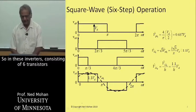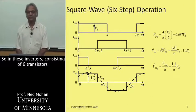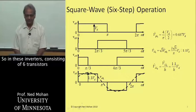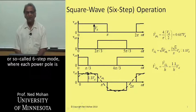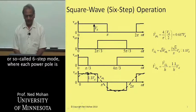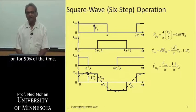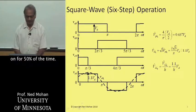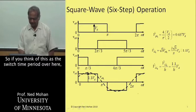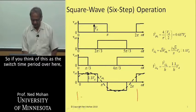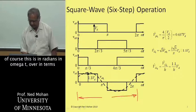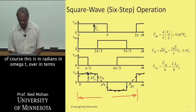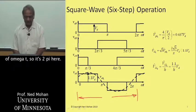In these inverters consisting of six transistors and six diodes, we could operate in a square wave or six-step mode, where each power pole is on for 50% of the time. If you think of this as the switching time period over here, of course this is in radians, in omega t.